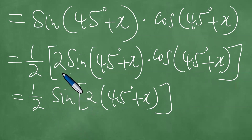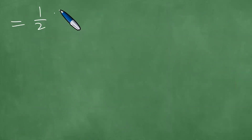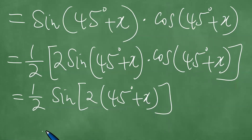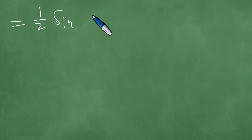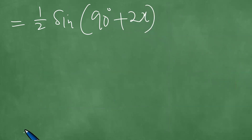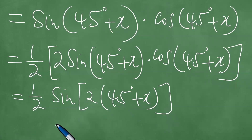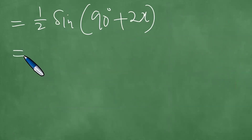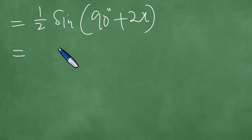Using the trigonometric double angle formula, this equals one half of the trigonometric sine of 2 into the parenthesis. We now multiply through: 2 times 45 is exactly 90 degrees, plus twice x. So in full: 2 times 45 is 90 and 2 times x is 2x, giving one half of the sine of 90 degrees plus 2x.